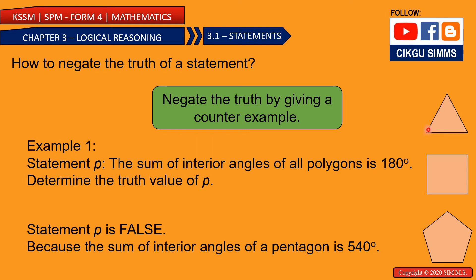For a triangle, this angle plus this angle plus this angle is 180 degrees. For a square, this plus this plus this plus this is the sum of interior angles. And also for this one, the sum of all interior angles.